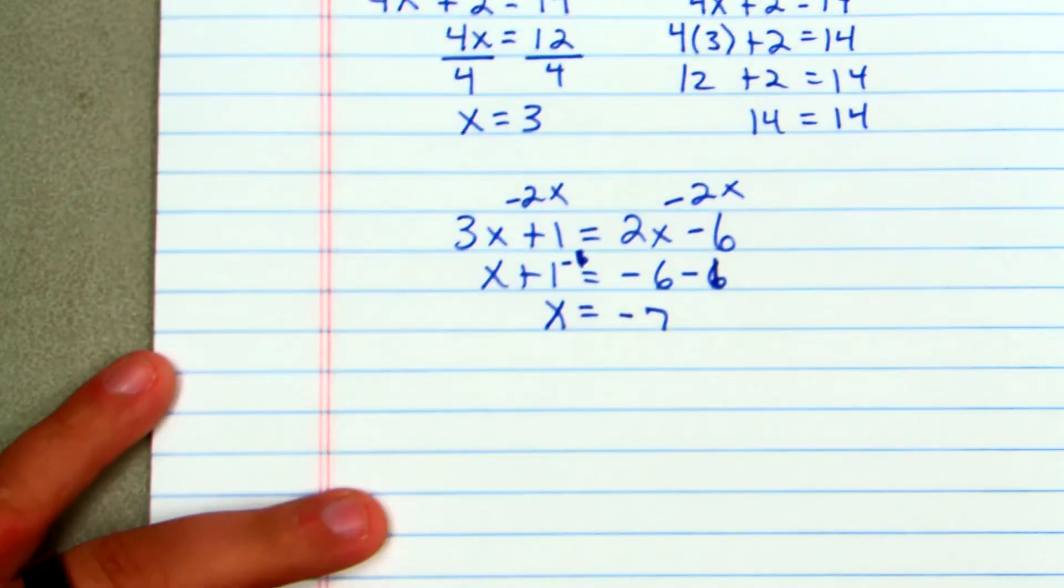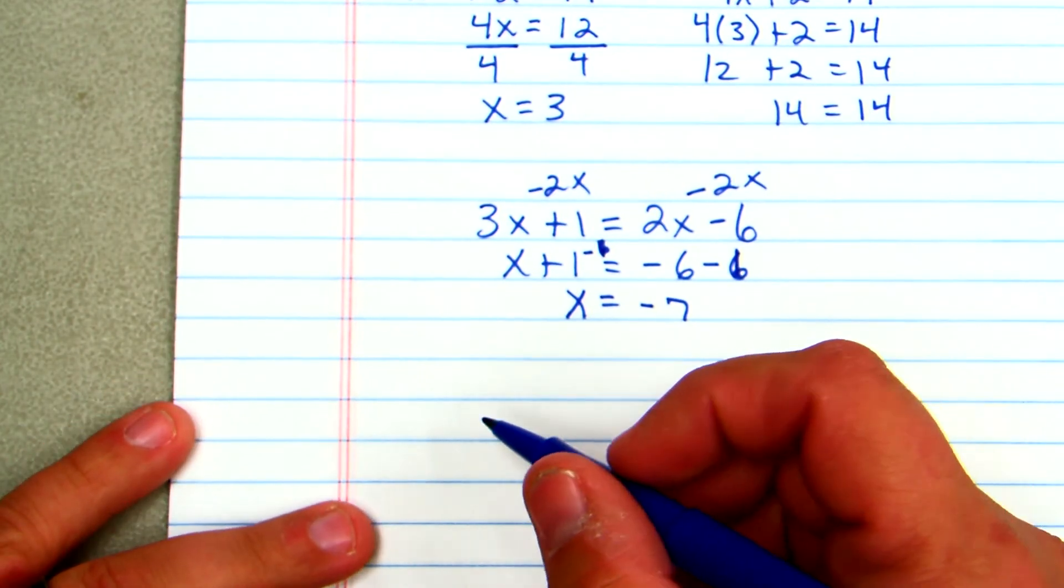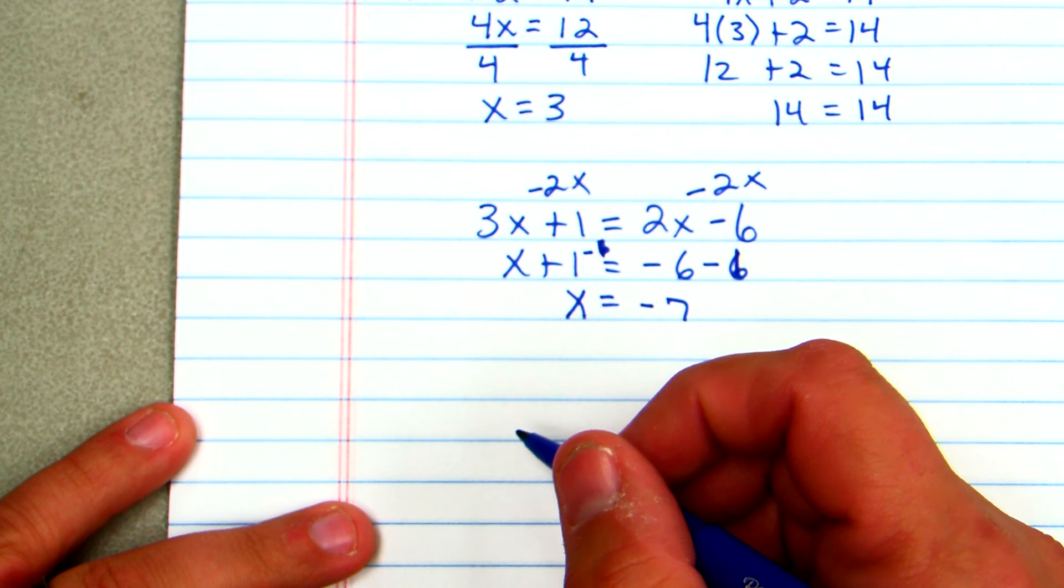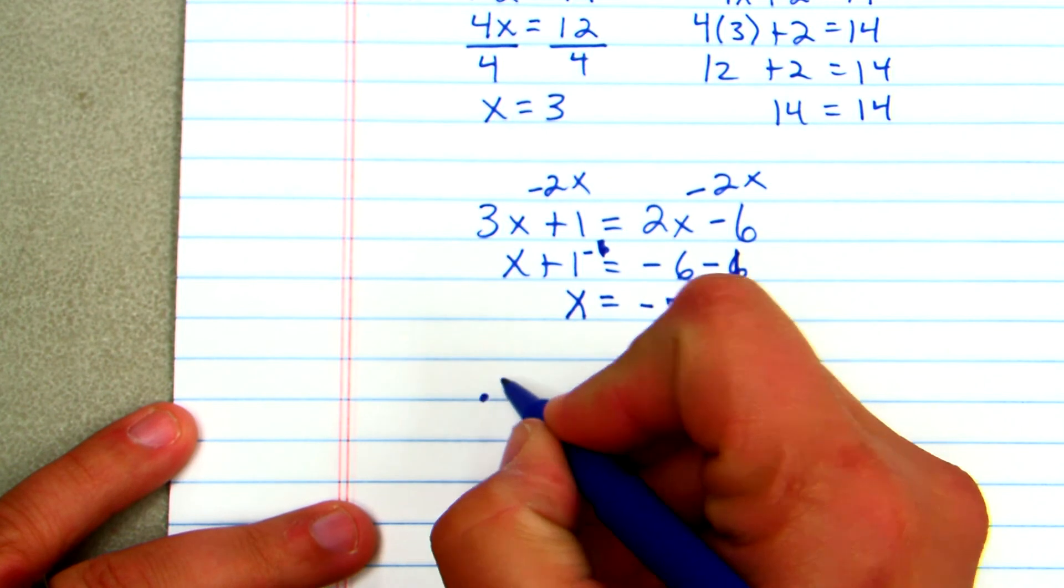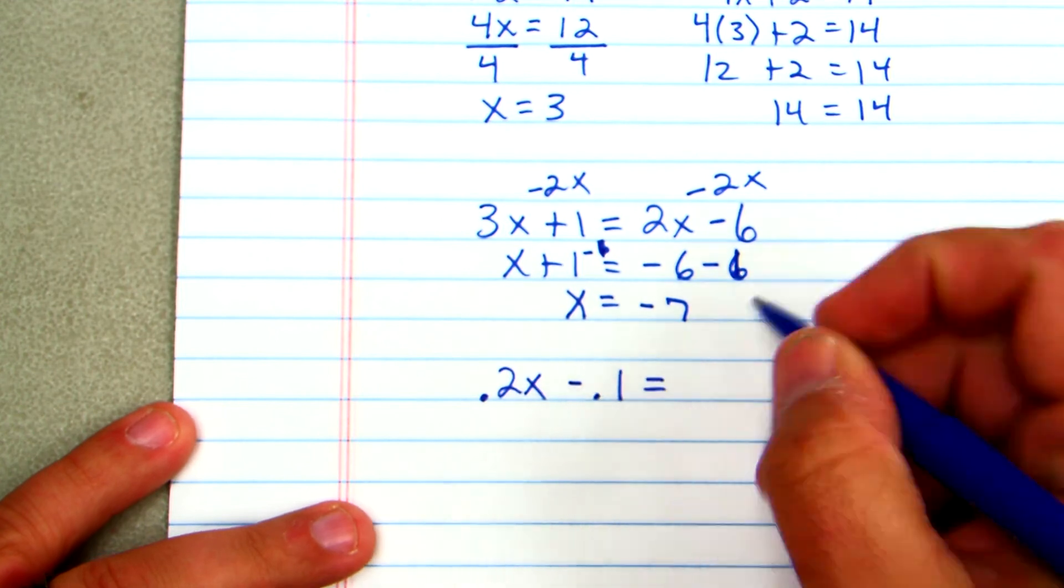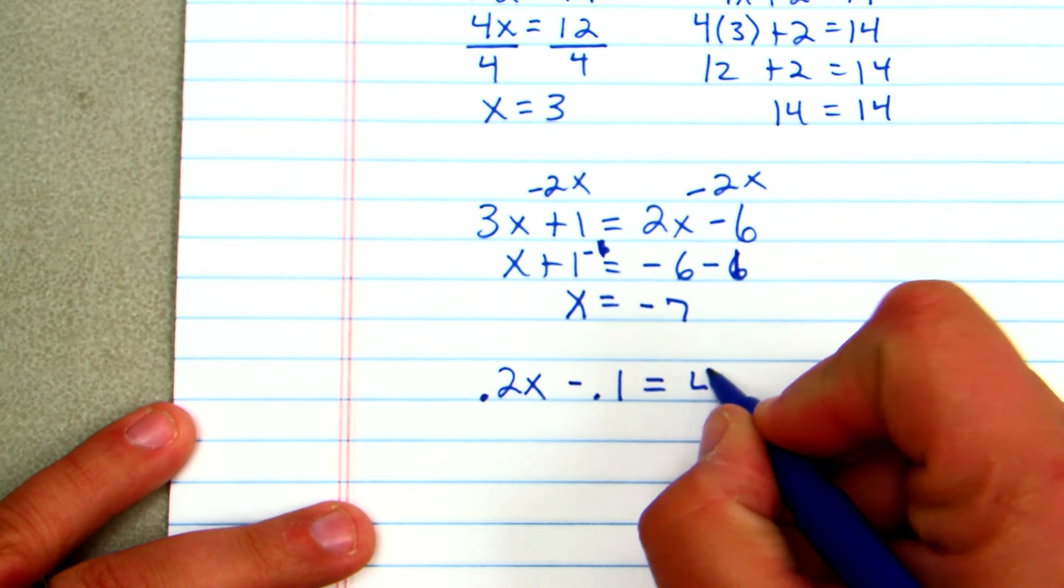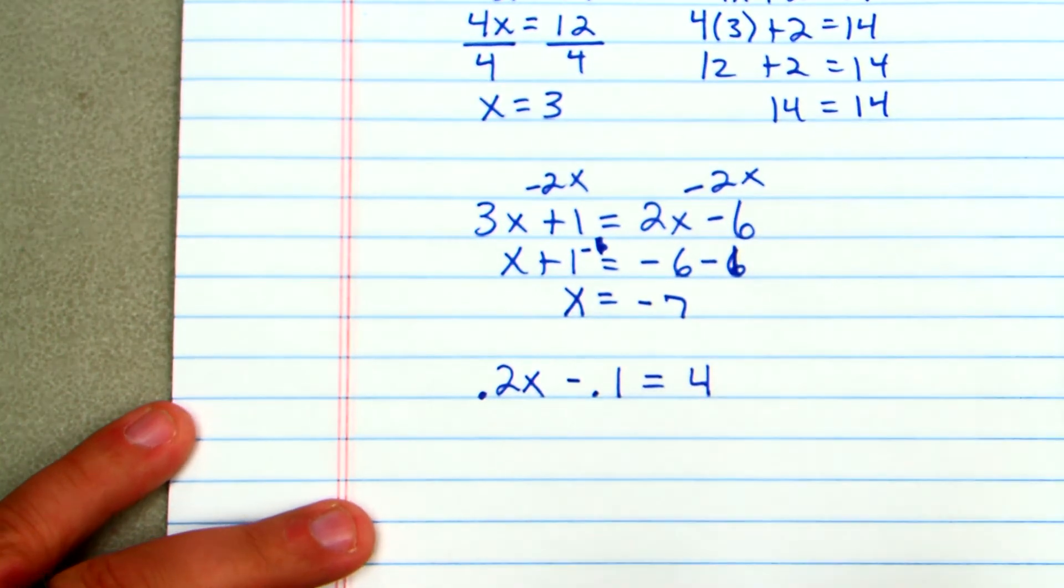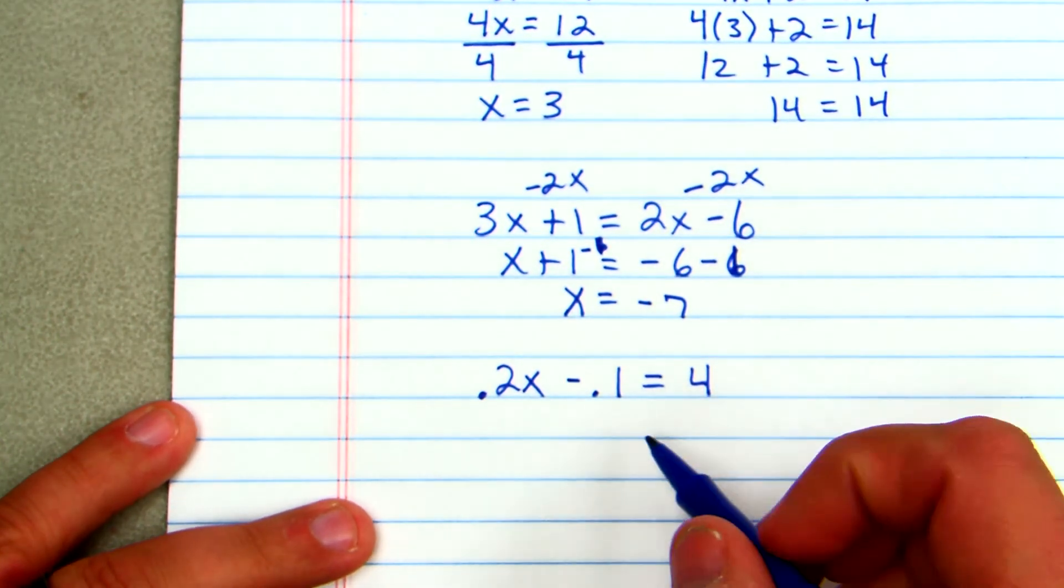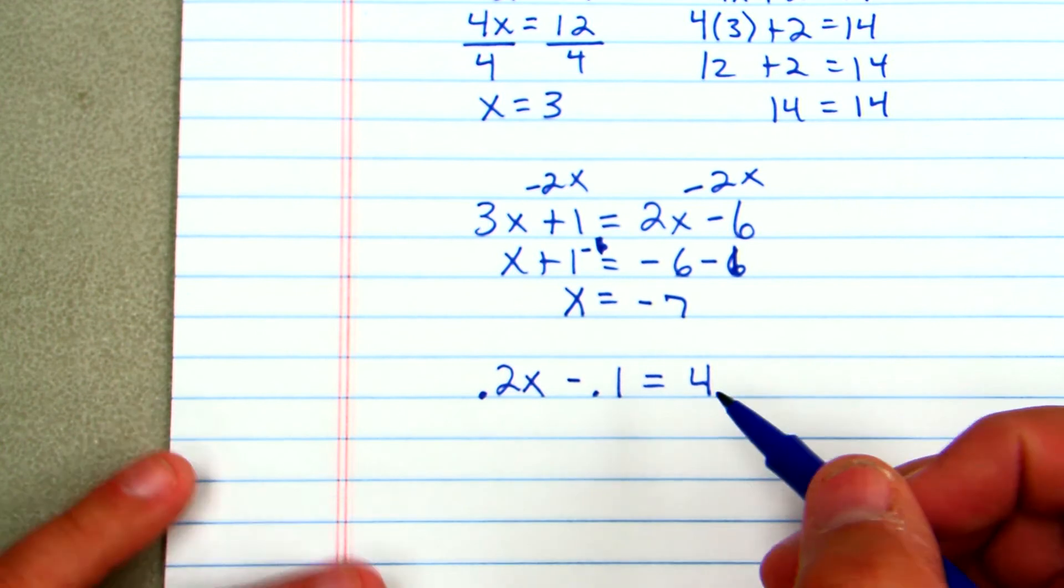The other type that we've dealt with would be a problem where there is decimal. So if I had something like 0.2x minus 0.1 equals, let's say, 4. So what you need to do first and foremost is go through and find out which decimal has the most decimal places. In this situation, it's the 10th spot.